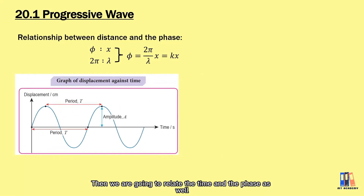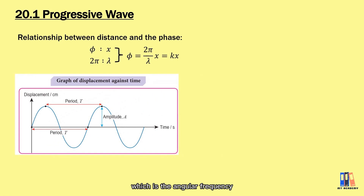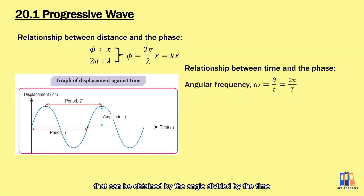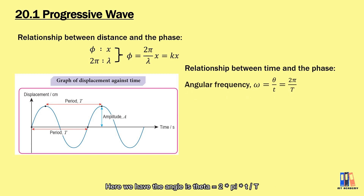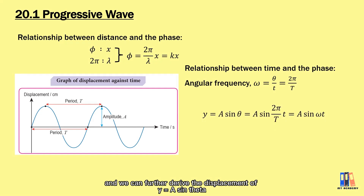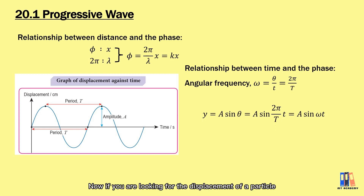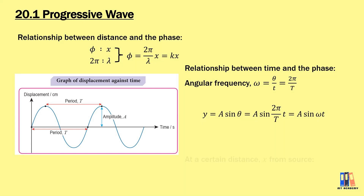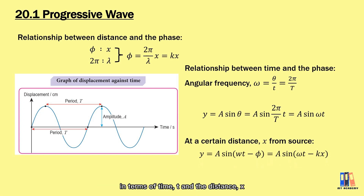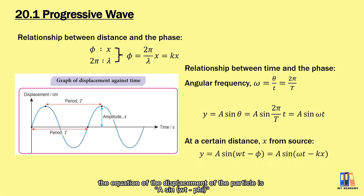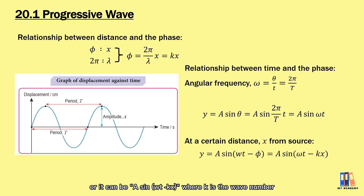Now we relate time and phase. Angular frequency ω = 2πf = 2π/T. So the angle θ = 2πt/T, and the displacement is y = a sin(θ) = a sin(2πt/T) = a sin(ωt). For a particle at distance x from the source, there is a phase difference between the particle and the source. Adding this phase difference into the equation, the displacement of the particle becomes y = a sin(ωt − φ), or y = a sin(ωt − kx), where k = 2π/λ is the wave number.